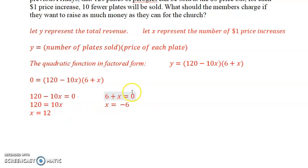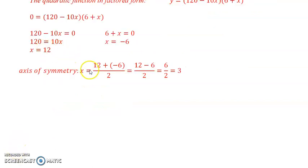So when I have the two zeros or the two x-intercepts, now I can use the axis of symmetry to find the vertex. So I plug in x1 and x2: 12 plus negative 6 would be 12 subtract 6 divided by 2, which is 6 divided by 2, which is 3.